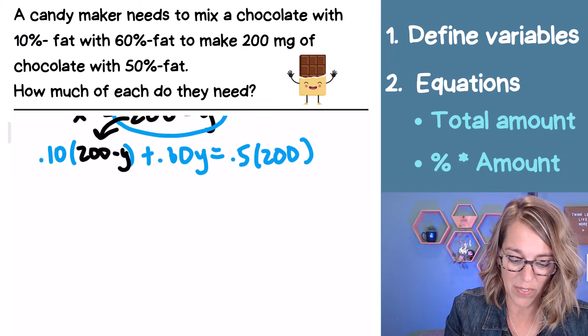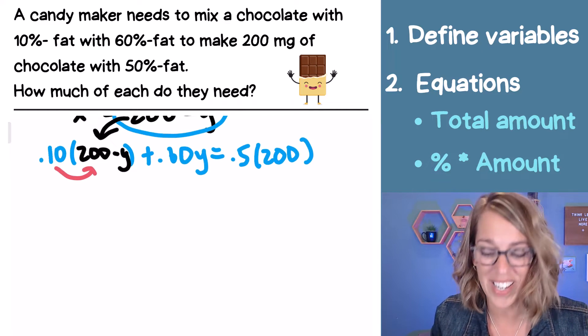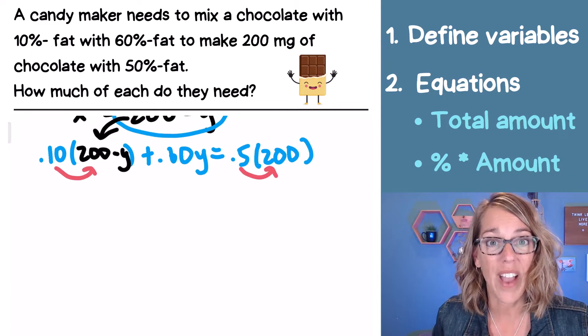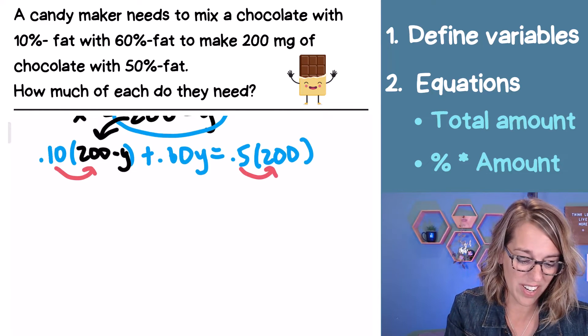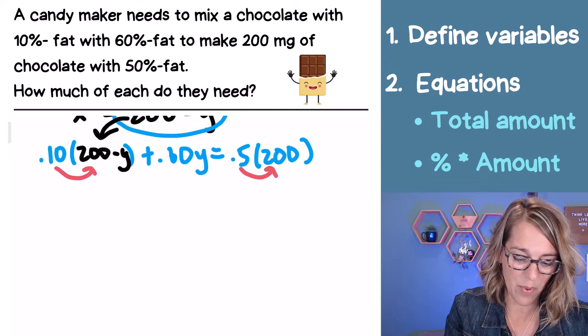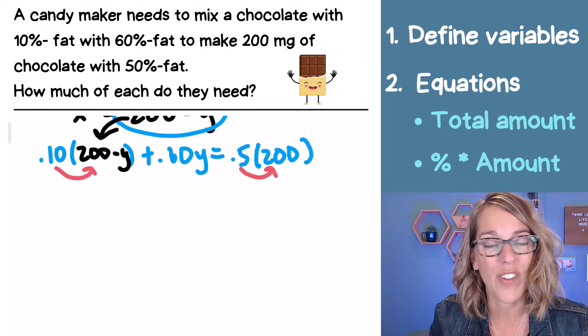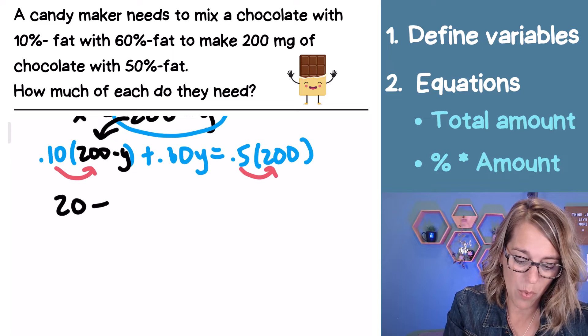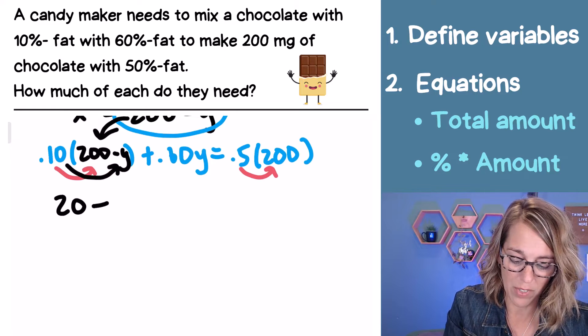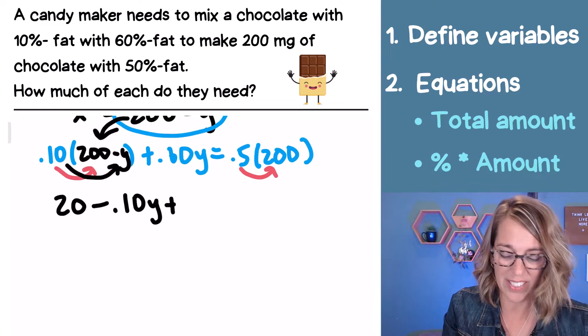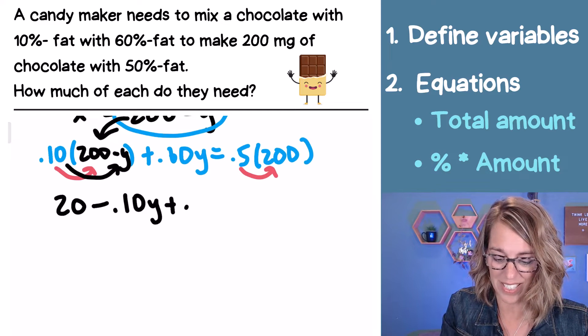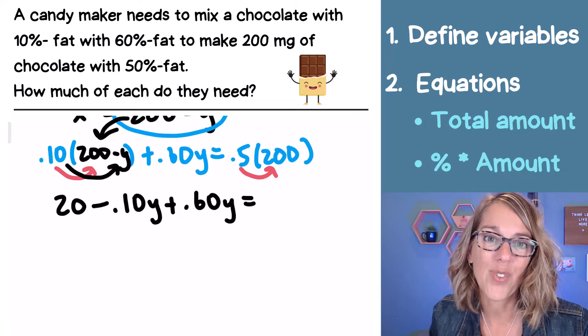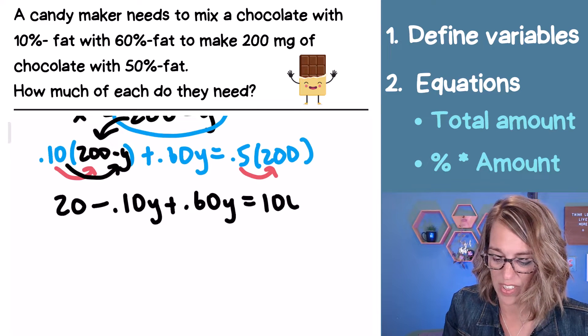I've got some simplifying to do. I'm going to distribute that 0.10 and I'm also going to simplify the right hand side and multiply 0.5 times 200. As I do that simplifying, I end up with 0.10 times 200. You can put this right into your calculator. That's 20. And then 0.10 times Y, I'm just going to write that as 0.10Y plus nothing to do with that 0.60Y. On the other side 0.5 times 200 is 100.